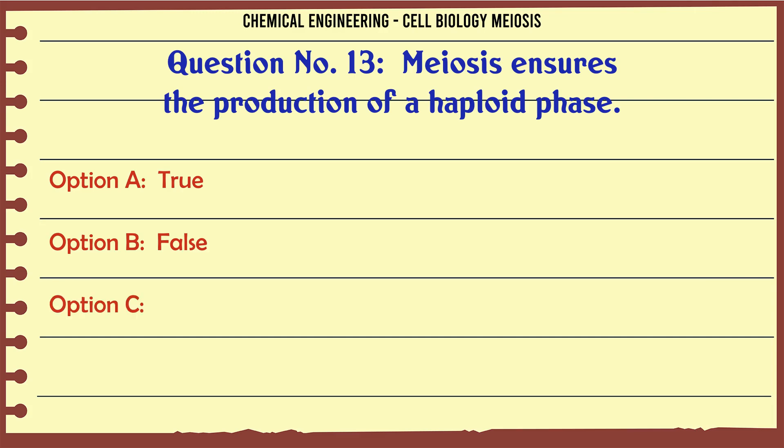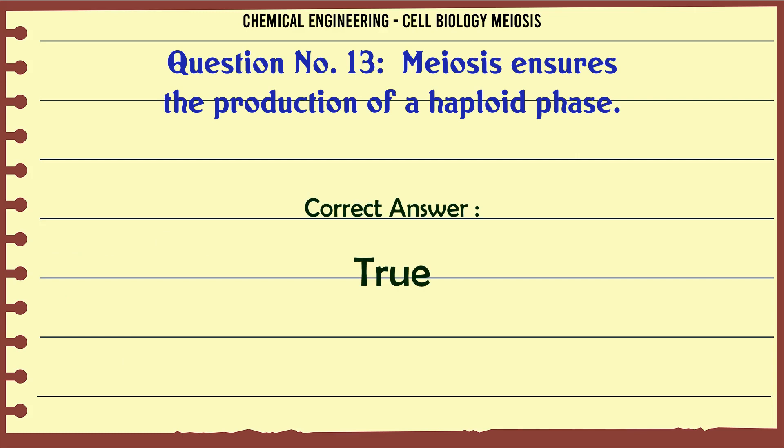Meiosis ensures the production of a haploid phase. A. True. B. False. The correct answer is True.